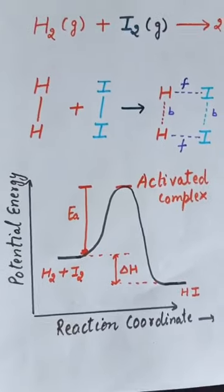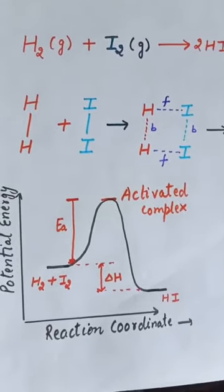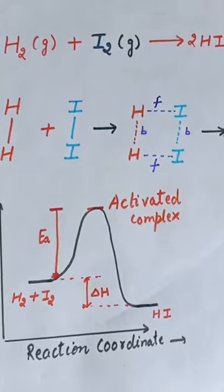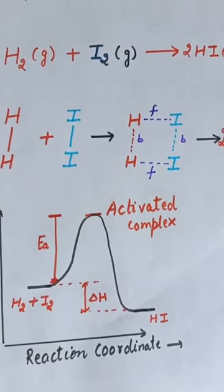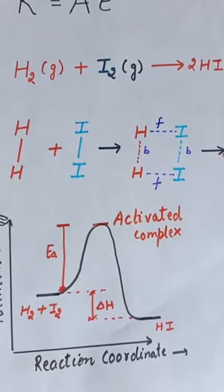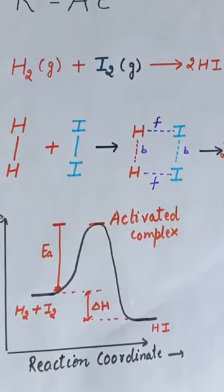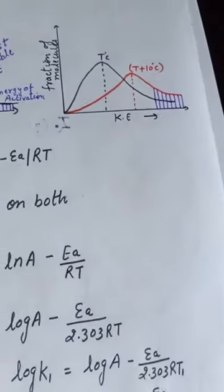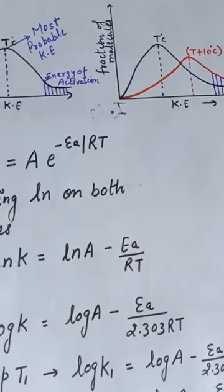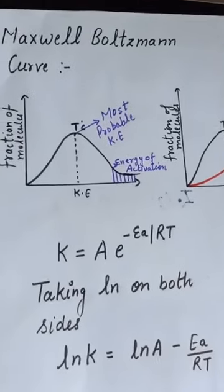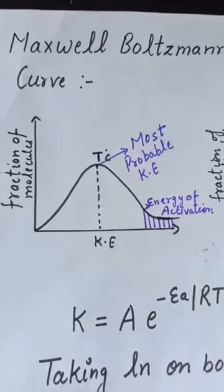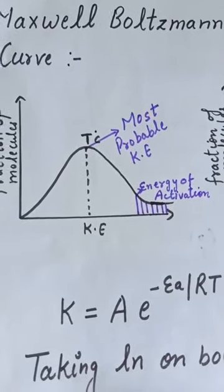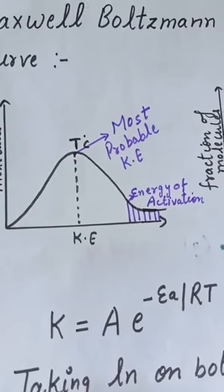As we increase the temperature, with every 10-degree rise in temperature the rate of reaction doubles. One reason is that on increasing the temperature, the number of collisions increases and therefore the rate of reaction increases. However, the Maxwell-Boltzmann curves explain why, with every 10-degree rise in temperature, the rate constant and the rate of reaction become double.